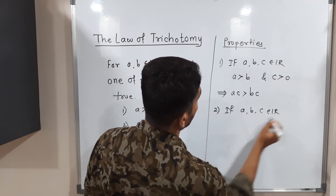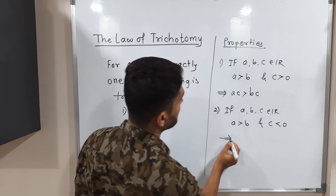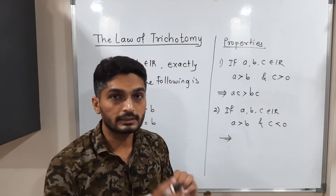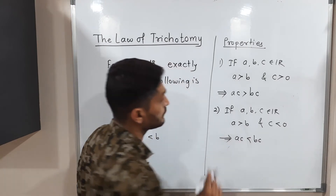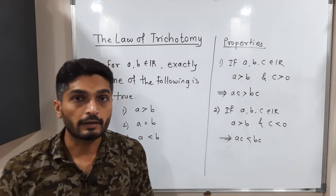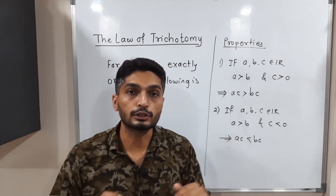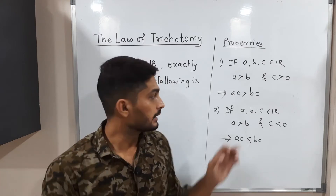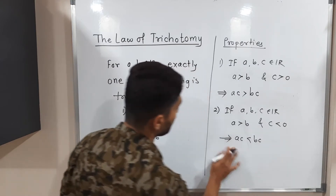The second part: if a, b, c are real numbers with a > b and c < 0 (c is negative), then if you multiply both sides by c, the inequality reverses — we get ac < bc. So multiplying by a positive number keeps the relation the same, but multiplying by a negative number gives the exactly opposite relation.